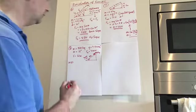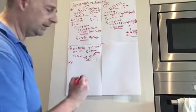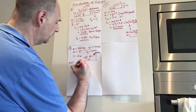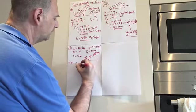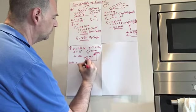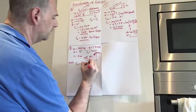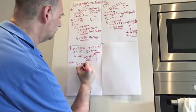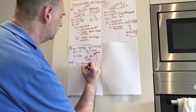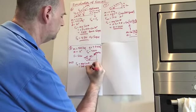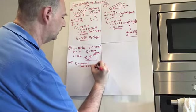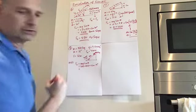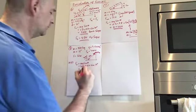So, first thing we would always work out in a scenario like this is the component of the weight parallel to the slope. That's our mg sine theta again. So that's going to be 900 times 9.8 times the sine of 15 degrees, which should give us 2300 newtons.